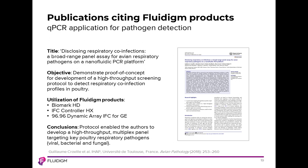There have been a number of publications on the Biomark platform. One applicable paper comes from a group in France published in 2018: Disclosing Respiratory Co-Infections, a Broad-Range Panel Assay for Avian Respiratory Pathogens on a Nanofluidic PCR Platform. They used the Biomark HD with the HX controller and the 96.96 Dynamic Array IFC. The authors concluded that the protocol enabled development of a high-throughput multiplex panel targeting key poultry respiratory pathogens including virus, bacteria, and fungal targets — proof of principle that the system supports this type of workflow.